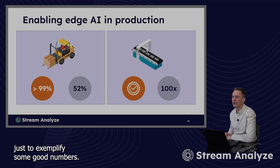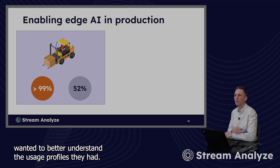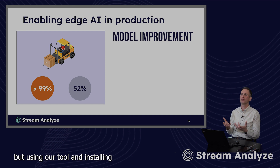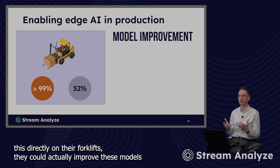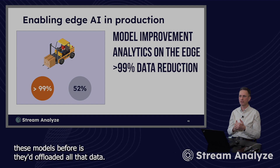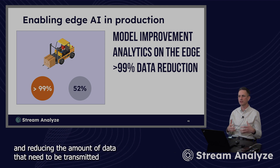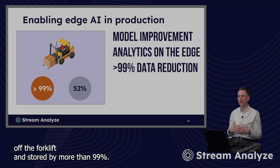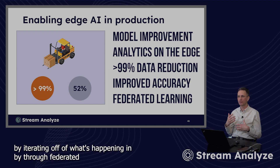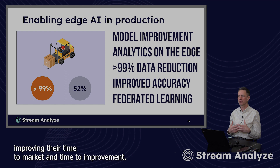A couple of use cases just to exemplify some good numbers here. We have one of the manufacturers of forklifts who wanted to better understand the usage profiles they had — they had actually developed some models for this already. But using our tool and installing this directly on their forklifts, they could actually improve these models by getting feedback on how things were actually behaving. The way they'd been doing these models before is they'd offloaded all that data. Now, pretty much all the data could stay on the forklift, reducing the amount of data that needs to be transmitted off the forklift and stored by more than 99%. The second is they could improve the accuracy of these models by iterating through federated learning — understanding what's happening out there on the factory floor — by 52%, improving their time to market and time to improvement.